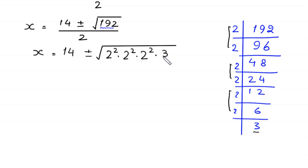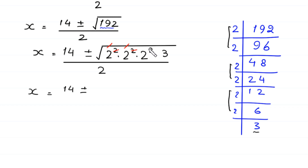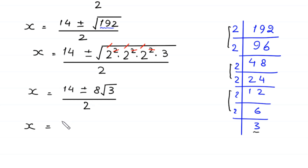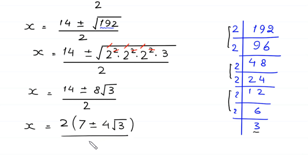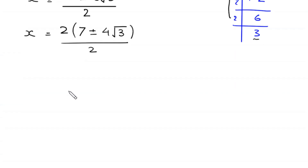After factorizing 192, the square cancels with the square root, giving 2 times 2 times 2, which is 8, times the square root of 3, divided by 2. Next, x equals — factoring out 2 as a common factor from the numerator — 2 times (7 plus or minus 4 times square root of 3), divided by 2. The 2s cancel.